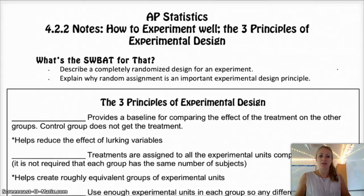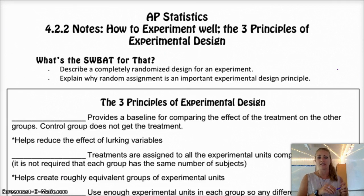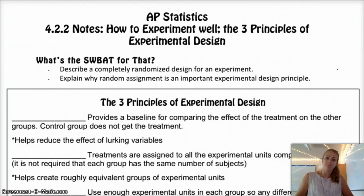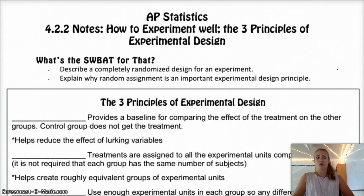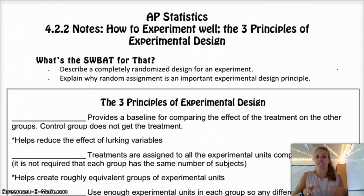Hello, APSATs! Hope you guys are having a great day. Today we're moving on to Chapter 4, Section 2, Day 2 of the Practice of Statistics, 4th edition, and we're going to talk about how to experiment well. There are three principles of experimental design — things that are absolutely necessary for a well-designed experiment, which is different than an observational study. Note that most of the terminology used up to this point has been about sampling and observational studies, and the experimental terminology is different, so you want to make sure you're using the appropriate terms.